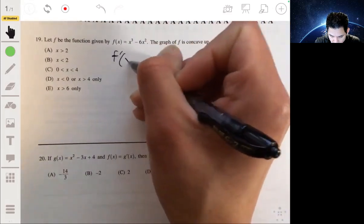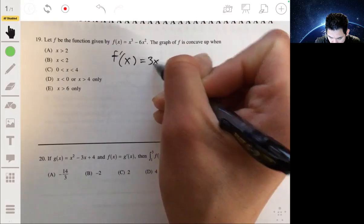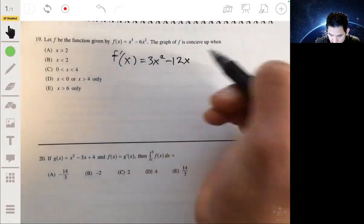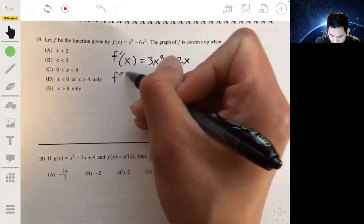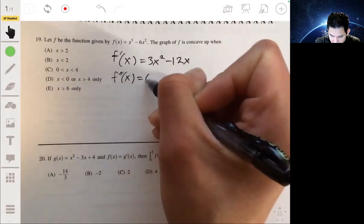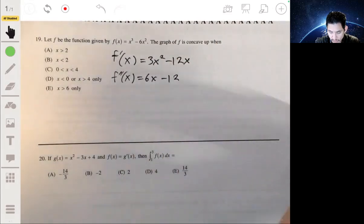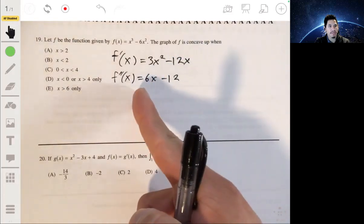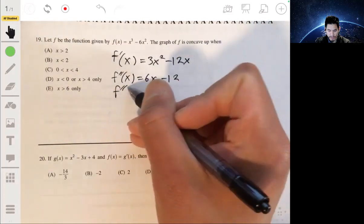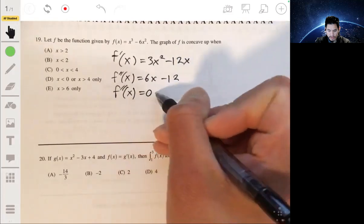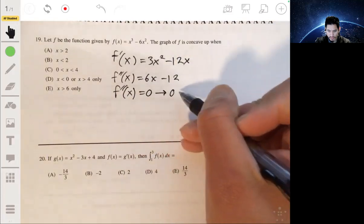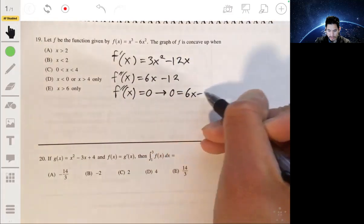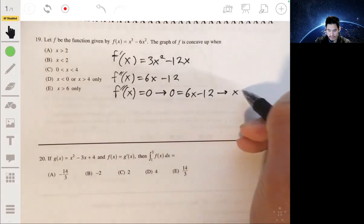So the first derivative would be equal to 3x squared minus 12x, and the second derivative would then be 6x minus 12. So we want to find the zeros of the second derivative. So for that, we just set it equal to 0, solve, and x is 2.